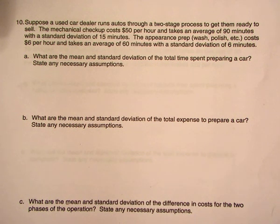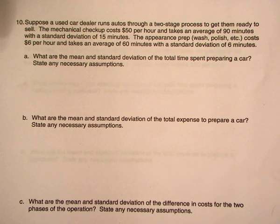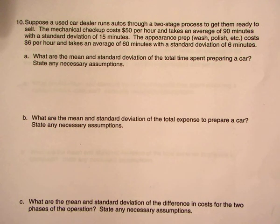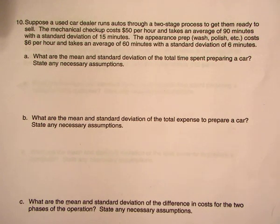Alright, here we go — problem 10. A car dealer runs autos through a two-stage process to get them ready to sell. The mechanical checkup costs $50 per hour and takes an average of 90 minutes with a standard deviation of 15 minutes. The appearance prep costs $6 an hour and takes an average of 60 minutes with a standard deviation of 6 minutes. What are the mean and standard deviation of the total time spent preparing a car?